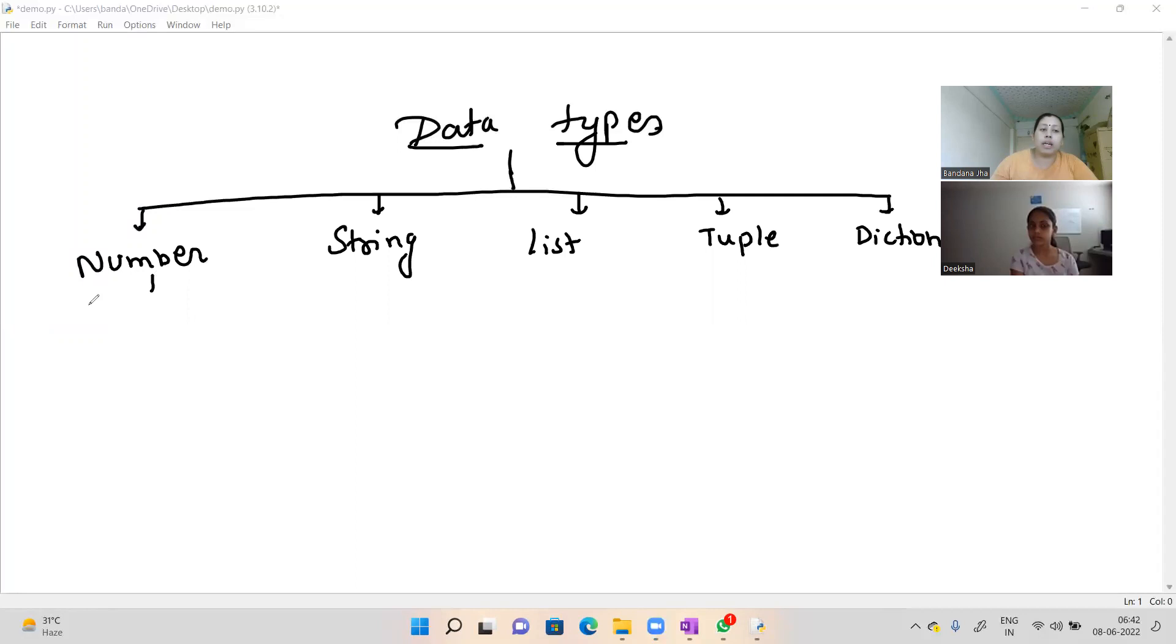Number is again subdivided into integer, then float, and then complex.